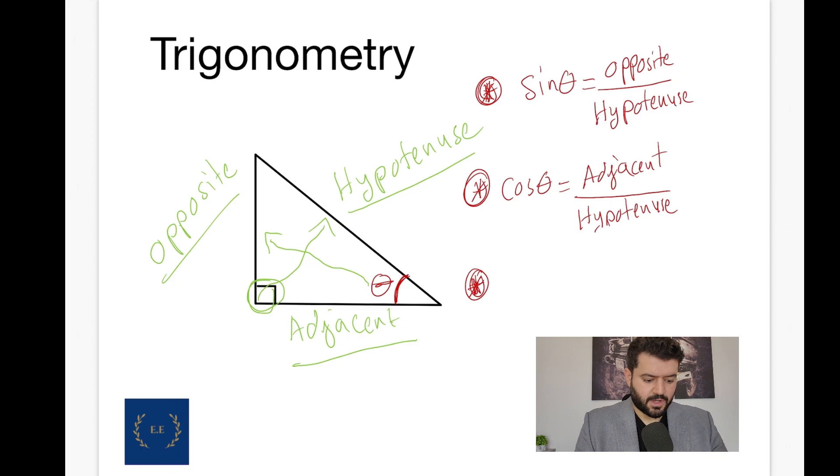Just to make sure everything is quite clear, tan theta, which means tangent, is the sine of theta divided by the cosine of theta, which equals to the opposite over the adjacent.